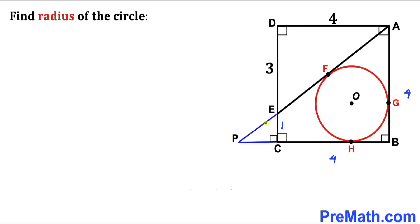In our next step, I have extended line AE all the way to point P, and likewise extended line BC all the way to point P, such that we get right triangle PCE.